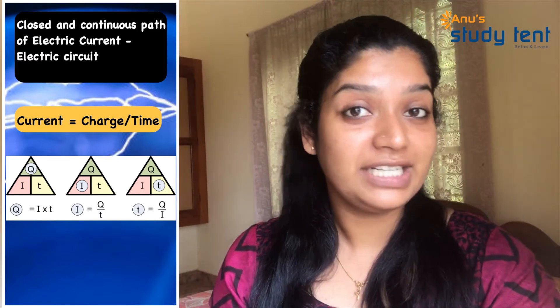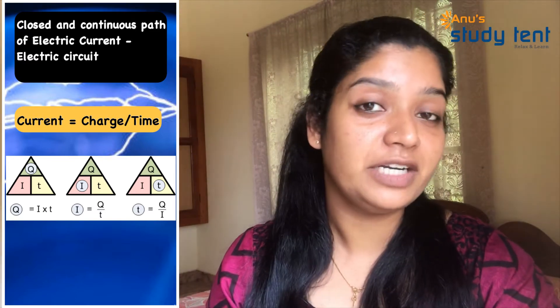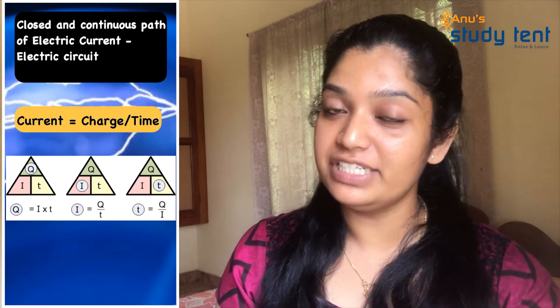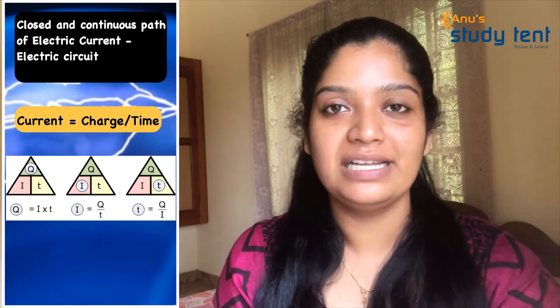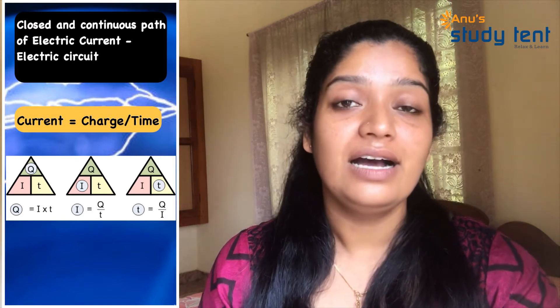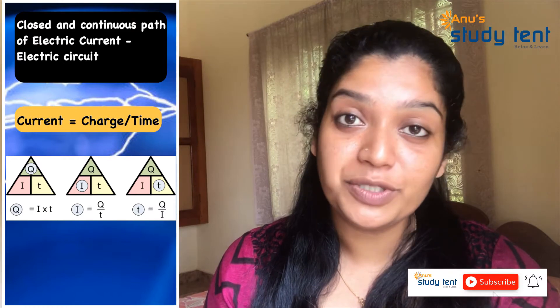Q is equal to charge in coulombs. The current I is equal to Q by t. 1 ampere is equal to 1 coulomb divided by 1 second.